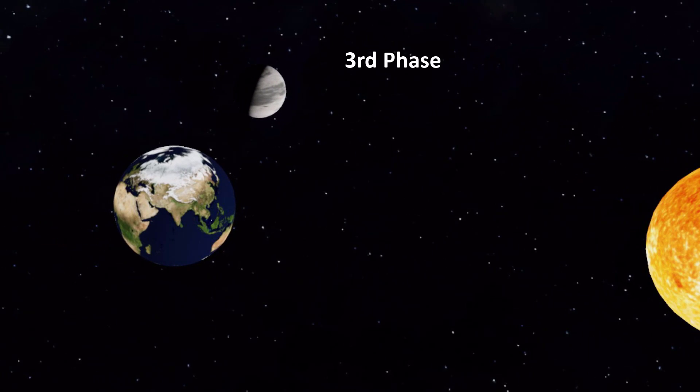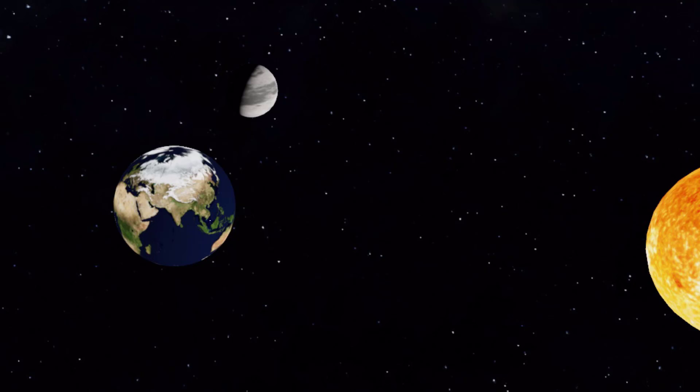The third phase of the moon is the first quarter. This occurs when half of the moon's illuminated side is visible to us. It is called the first quarter because it is one quarter of the way through the lunar cycle.